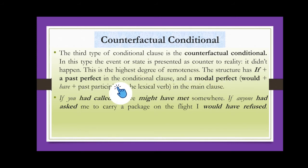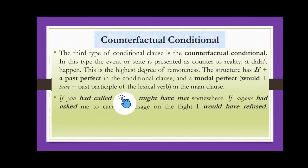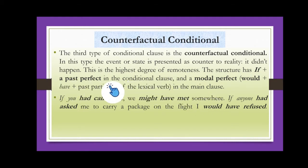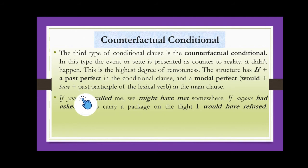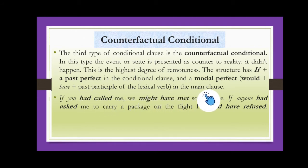The structure of Type 3 is: if + past perfect in the conditional clause, and modal perfect (would + have + past participle of the lexical verb) in the main clause. For example, 'If you had called me, we might have met somewhere.' Here, 'if you had called me' uses if + past perfect tense, and 'we might have met somewhere' uses a modal perfect.